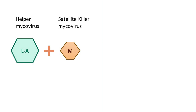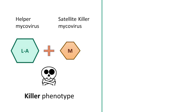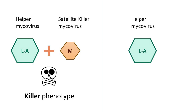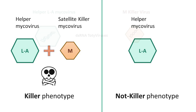The co-infection of yeast cells with both helper LA and satellite M mycoviruses is what triggers the production of these lethal toxins. It's worth mentioning that the helper mycovirus alone is insufficient to induce the killer phenotype, and yeast cell infections with this virus typically proceed without visible symptoms.